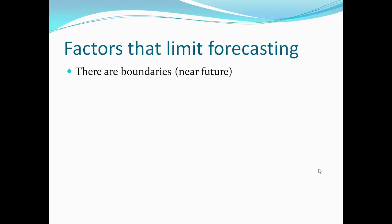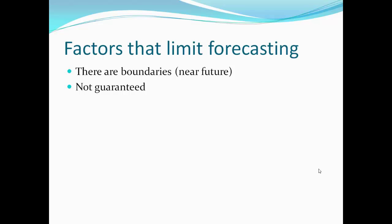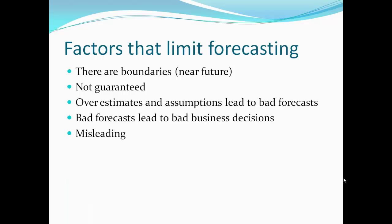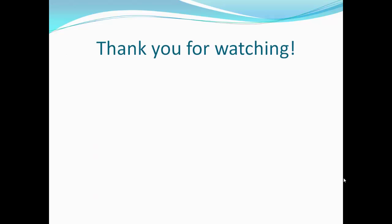Some economists say up to about 2 years is the maximum you are able to predict because there are too many variables that could change in that time. The main problem is that forecasts are not guaranteed at all. Any factor is able to change which will influence the outcome. Factors can change within a matter of seconds, minutes, or days, and are completely unpredictable. Overestimates and assumptions can lead to creating an inaccurate forecast and businesses making bad decisions. Never rely fully on a forecast as it will not always guide you in the right direction and can actually mislead you. Always have a backup idea or plan ready for the business in case a forecast goes wrong.